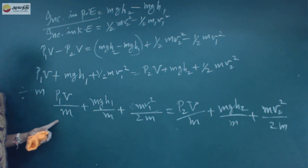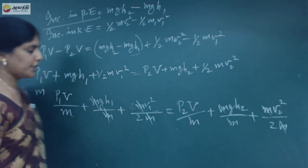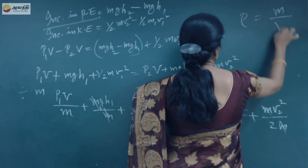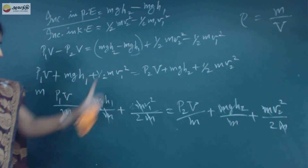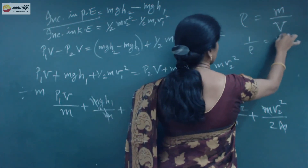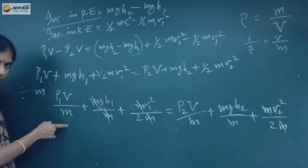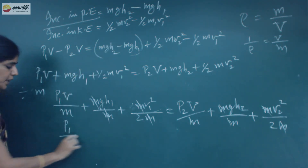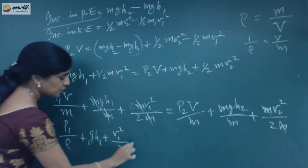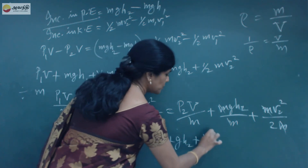All the M terms cancel. For the term V/M (volume by mass), since density rho equals mass by volume, volume by mass equals 1 by rho. So P1V/M becomes P1 by rho. The equation becomes P1 by rho plus gH1 plus V1 squared by 2 equals P2 by rho plus gH2 plus V2 squared by 2.